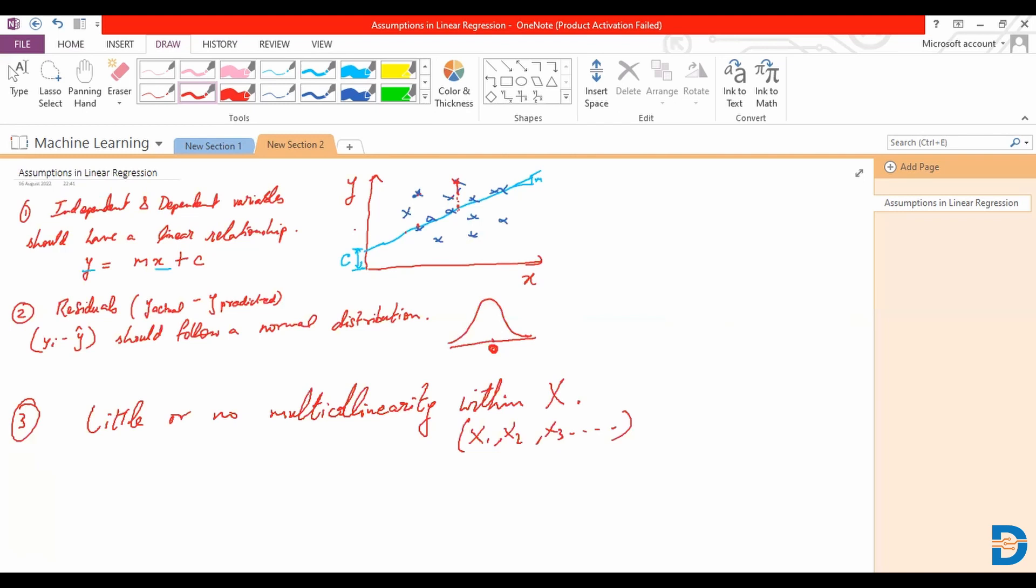Or rather actually tolerance needs to be beyond a certain limit. Okay we say tolerance T, if it's less than 0.01 okay that denotes presence of multicollinearity.